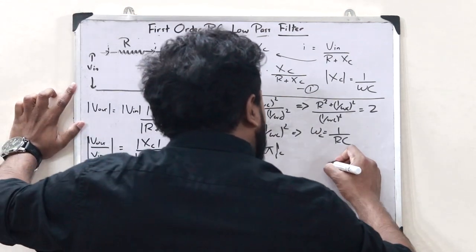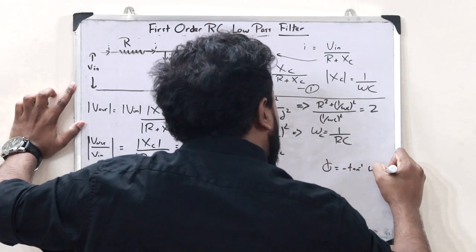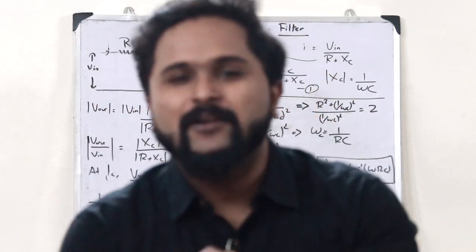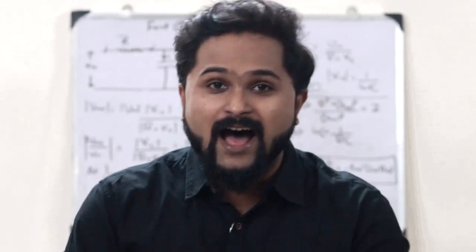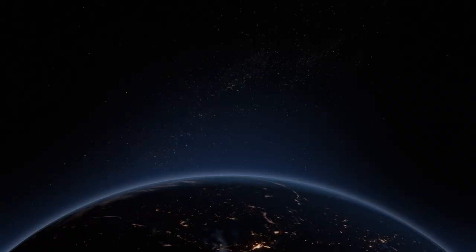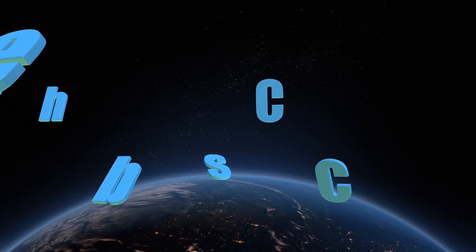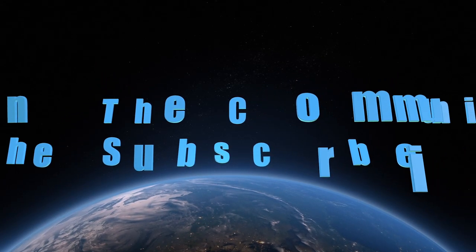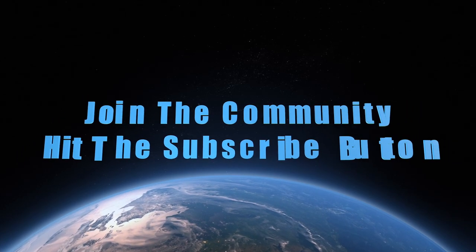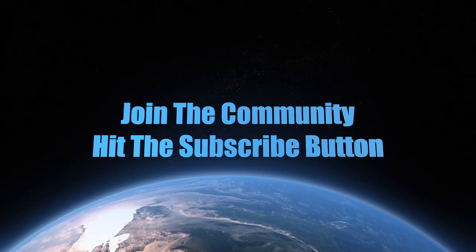The cut-off frequency of a first-order RC low-pass filter is F_C = 1/(2πRC). The phase is given as φ = −tan⁻¹(ωRC). This is simply what you refer to as a first-order RC low-pass filter. I hope you now understand this concept. If you found this video informative, please hit the like button and subscribe. We'll be discussing further topics in upcoming videos — stay tuned, until next time!